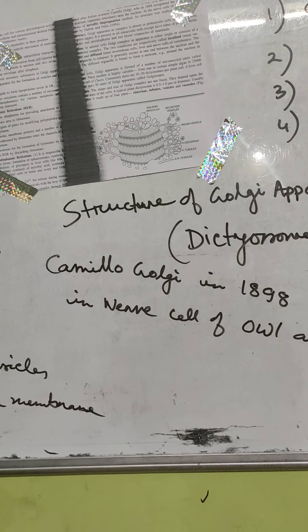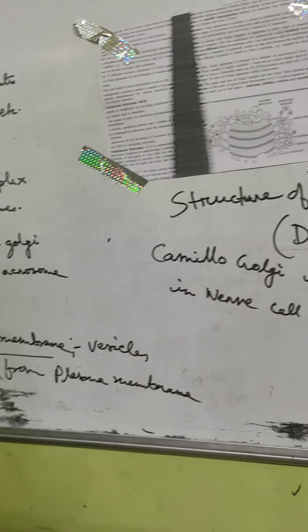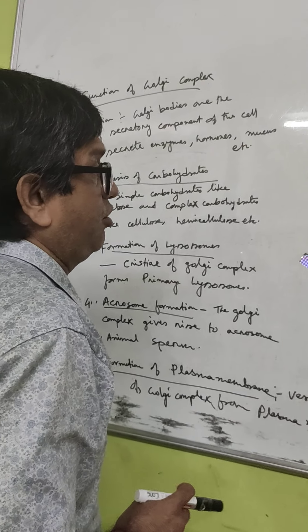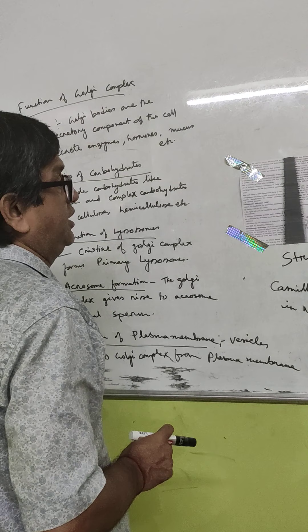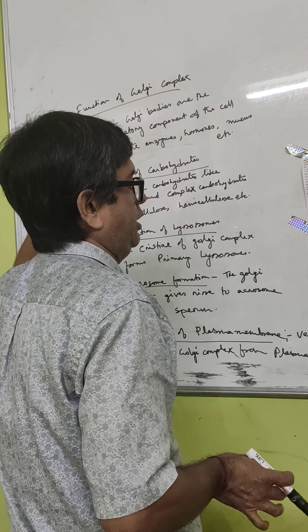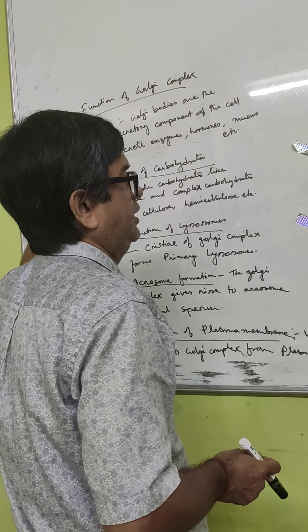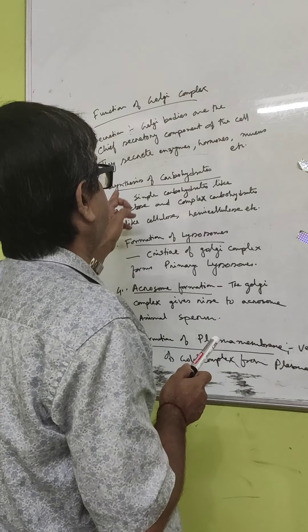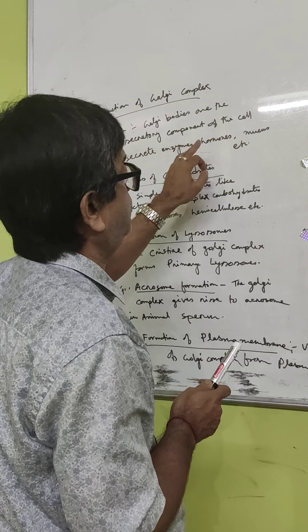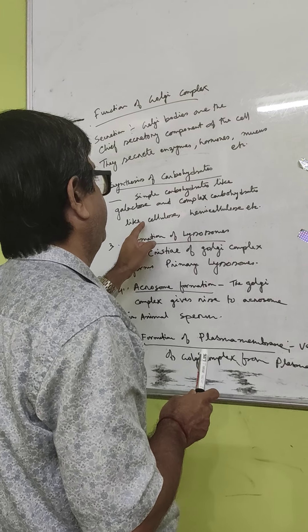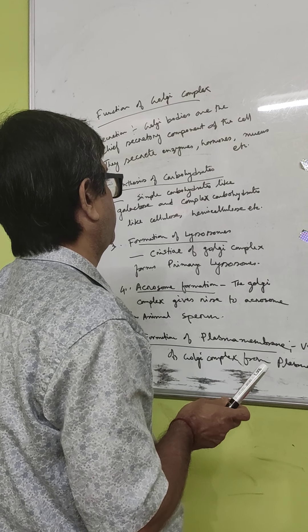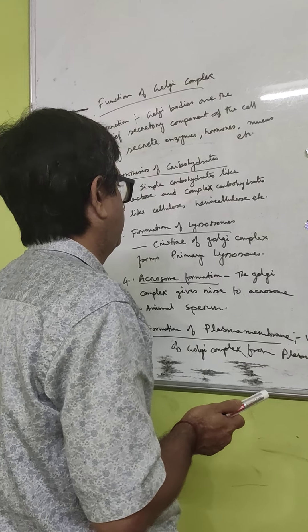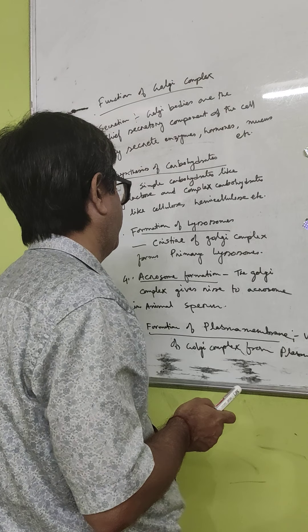The main function of Golgi complex is secretion. They are the chief secretory component of the cell and they secrete enzymes, hormones, and ribosomes. Golgi complex also synthesizes simple carbohydrates like galactose and complex carbohydrates like cellulose and hemicellulose. In addition, vesicles of Golgi complex form the primary lysosomes.